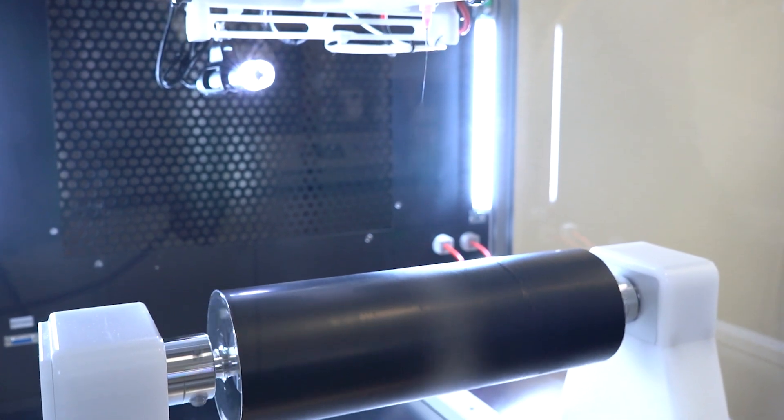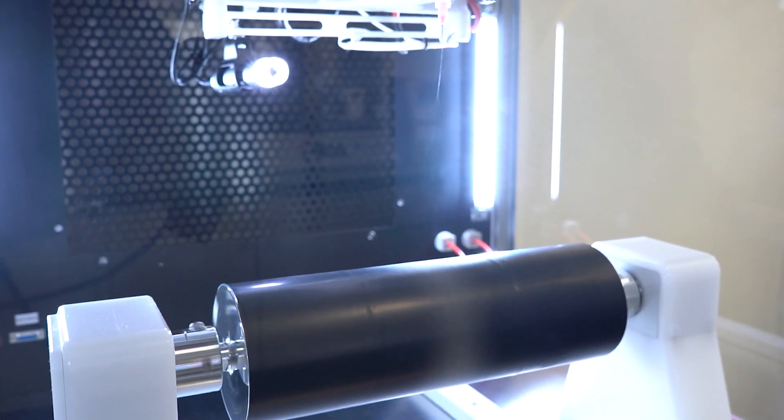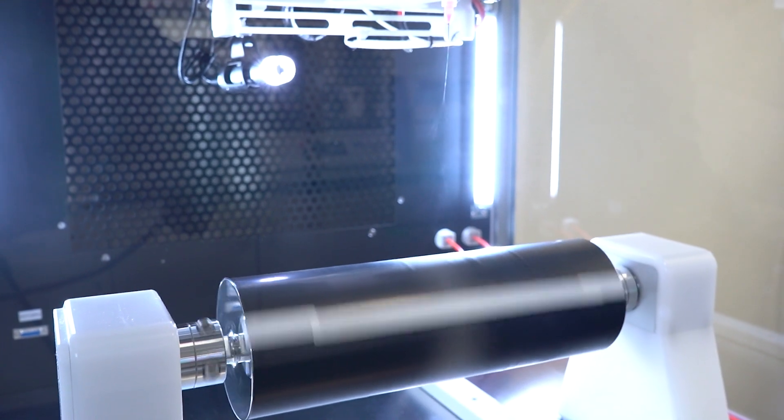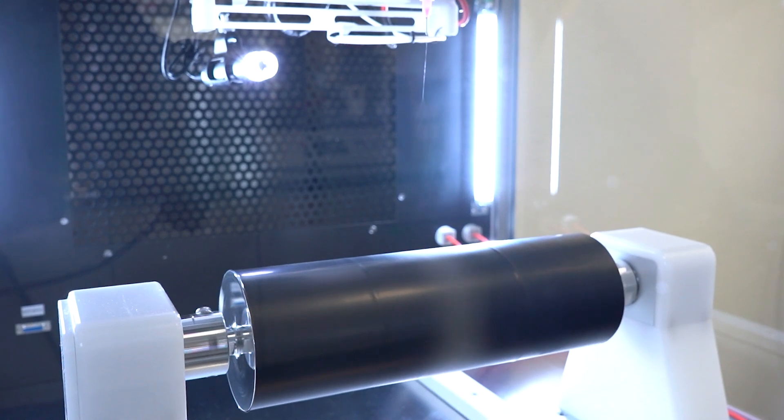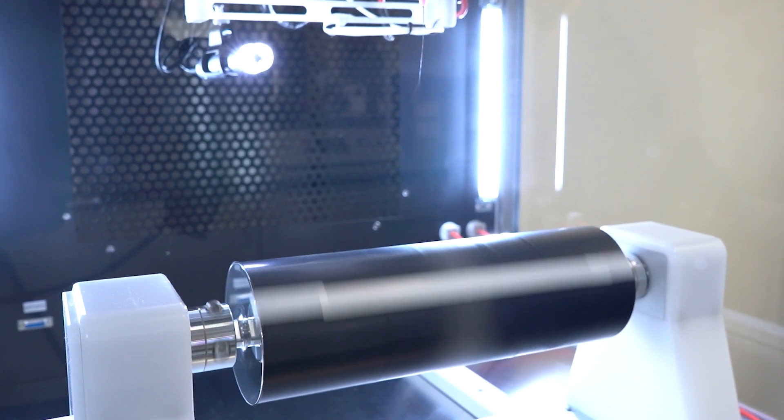Going back to our current setup, the electric field between the spinneret and the collector causes the jet to elongate into an ultra-thin nanofiber before depositing on the collector surface. It's truly mesmerizing to watch these nanofibers take shape right before your eyes.